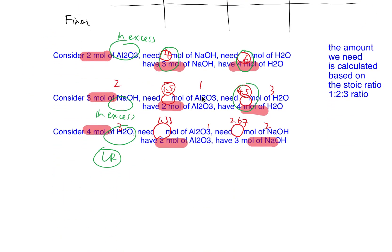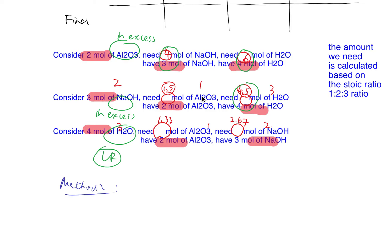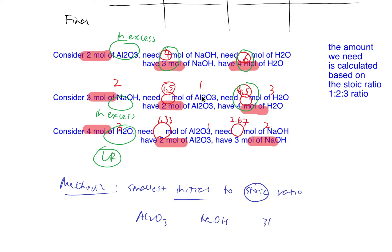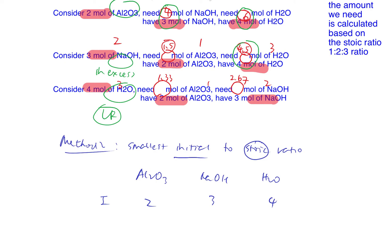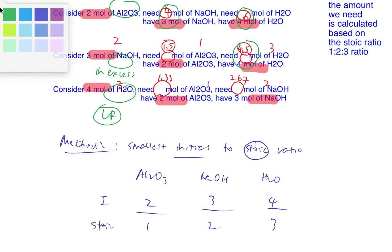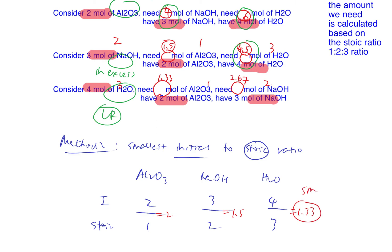There is another method — Method 2. You can use the smallest initial to stoichiometry ratio. Divide the initial amount by the stoichiometry ratio for each substance. For aluminium oxide, sodium hydroxide, and water, the initials are 2, 3, 4 and the stoichiometry ratios are 1, 2, 3. So: 2 divided by 1 is 2; 3 divided by 2 is 1.5; 4 divided by 3 is 1.33. This is the smallest, which further confirms that water is definitely the limiting reagent.